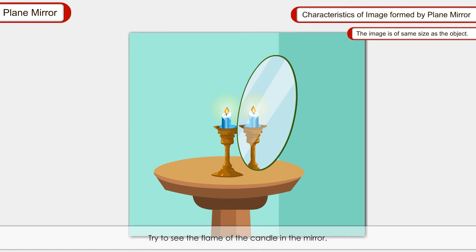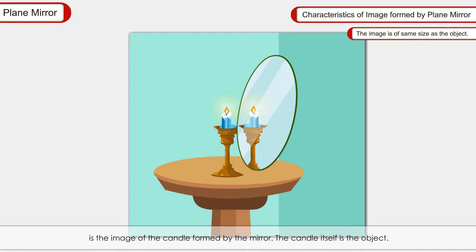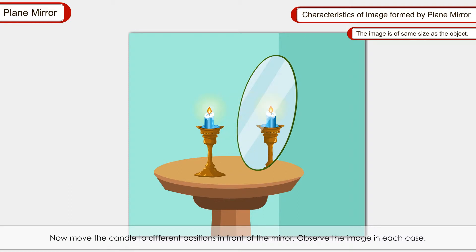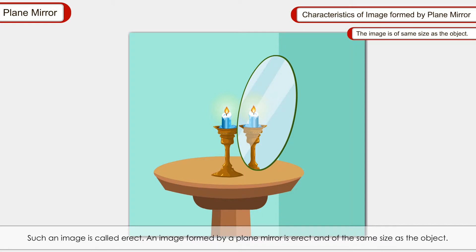The image is of the same size as the object. If you look at the flame of a candle in the mirror, it appears as if an identical candle is placed behind the mirror — the candle behind the mirror is the image, and the candle itself is the object. Moving the candle to different positions in front of the mirror, you can see the image is always upright and the flame appears on top of the candle, just like the object. Such an image is called erect.